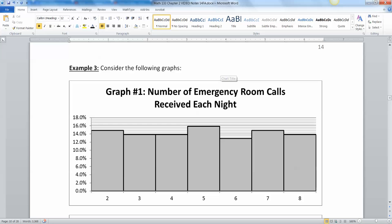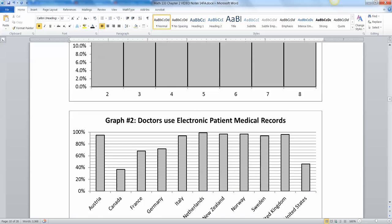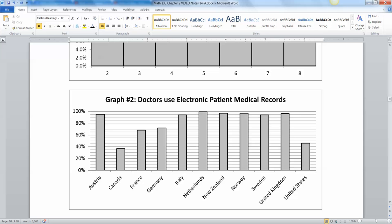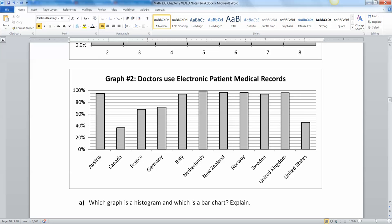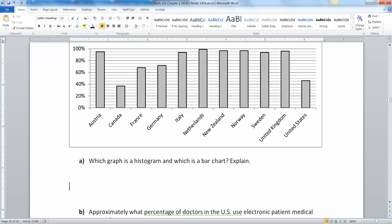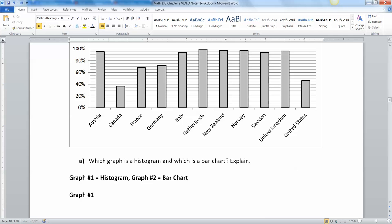All right. So I have two graphs here. This is the number of emergency room calls received each night. And this one is doctors use electronic patient medical records. So which graph has a histogram and which graph has a bar chart? Graph number one is a histogram. Graph number two is a bar chart or bar graph. Now, how do I know that? Well, that's because graph number one has quantitative data on the x-axis and the bars touch. Graph number two has qualitative data on the x-axis and the bars do not touch.